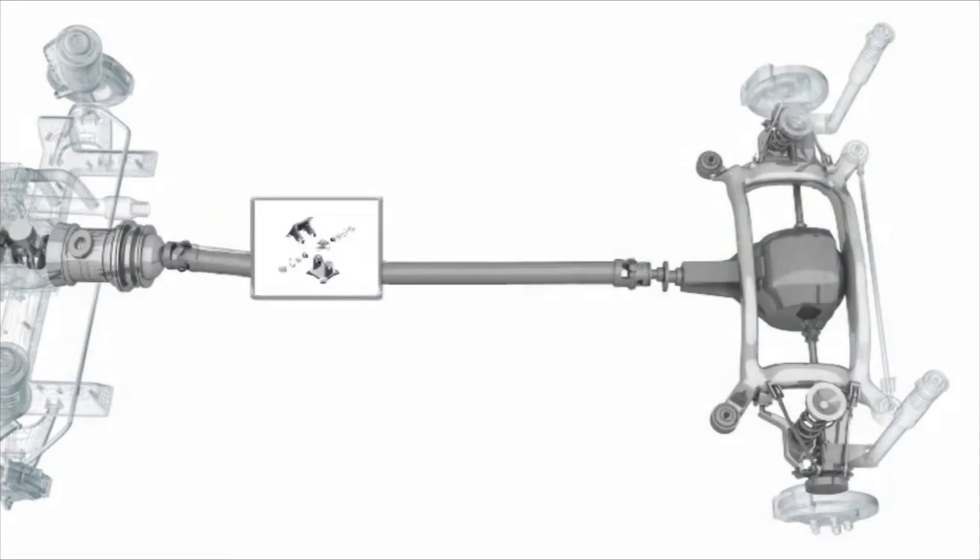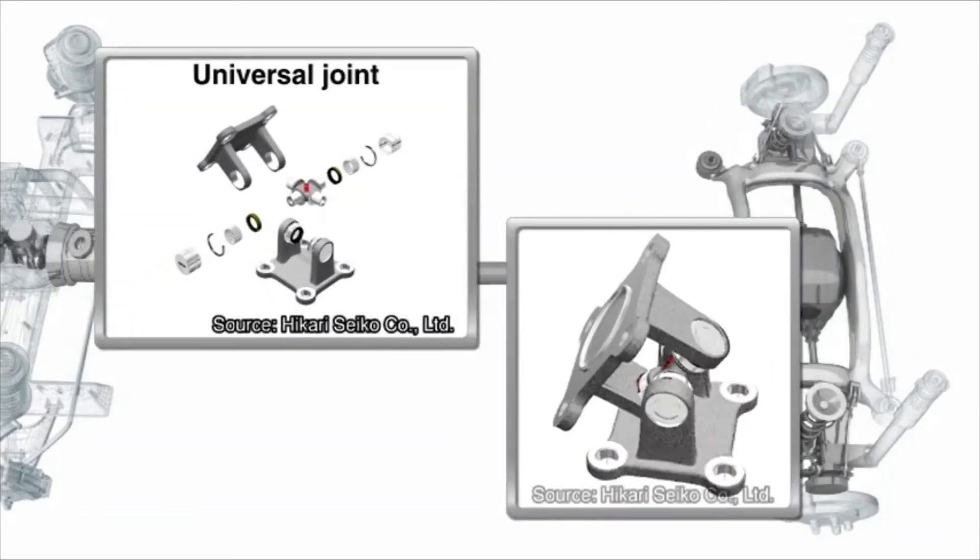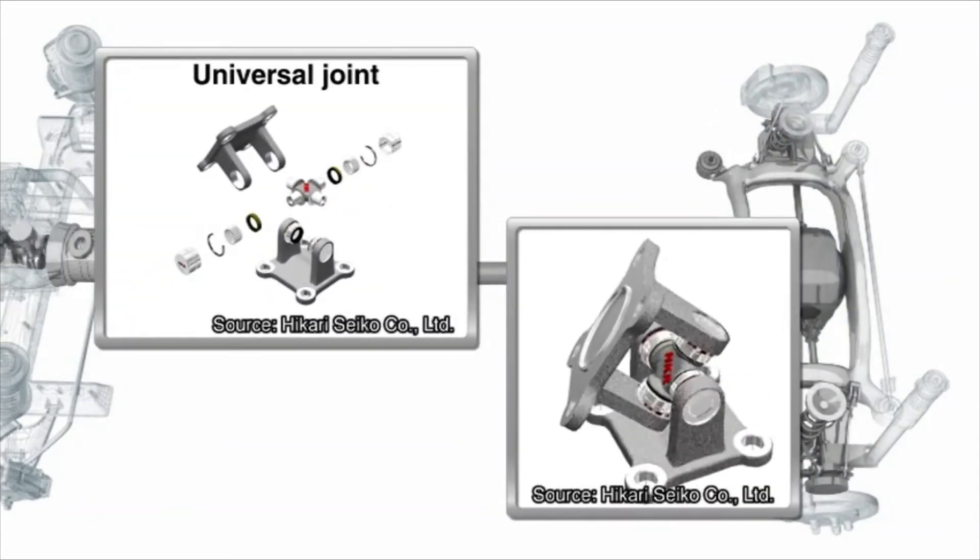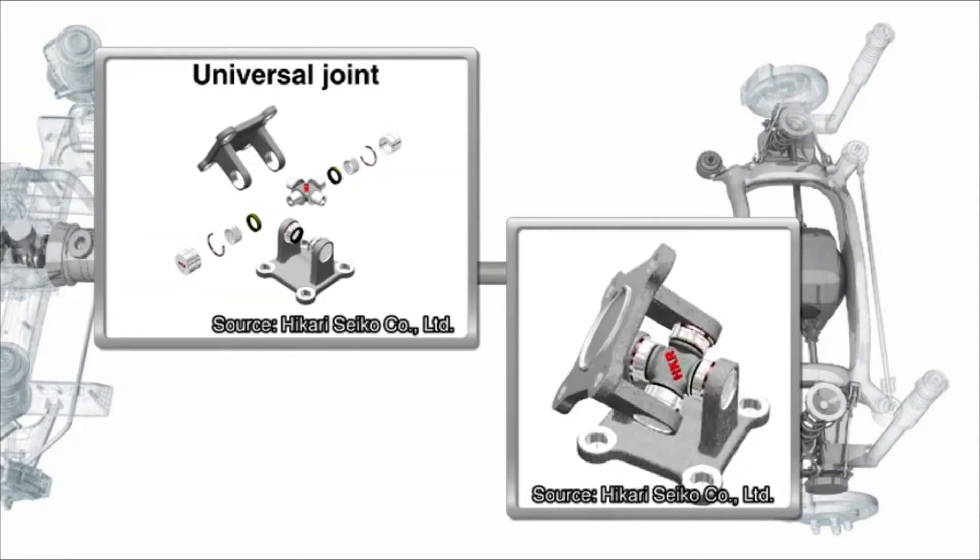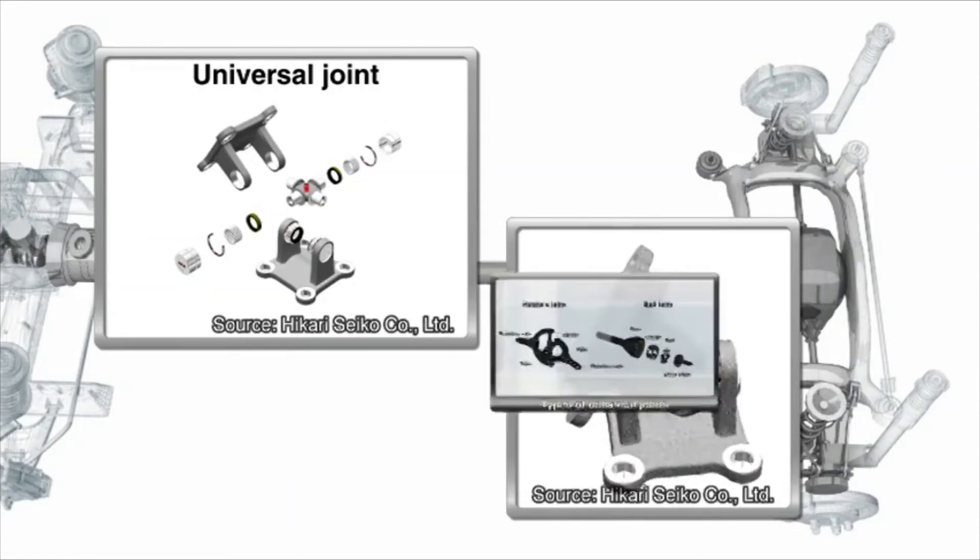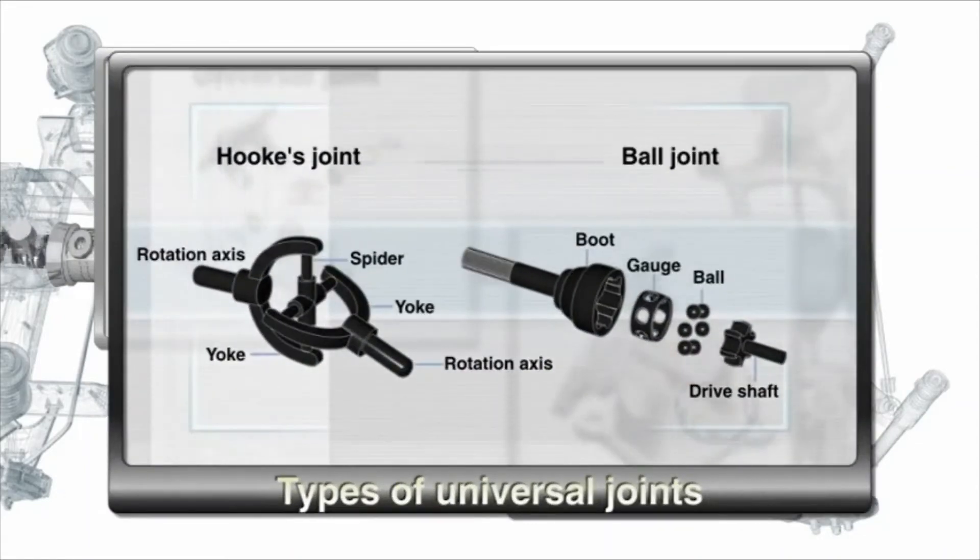Universal joints allow the relative movement necessary to transmit rotary motion as the angles and distance change between the two parts. Hooks joints and ball joints are common types of universal joints.